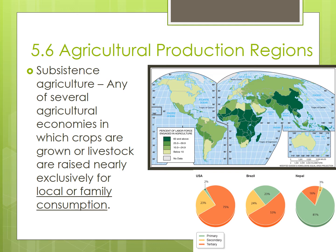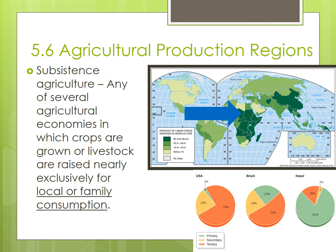But during the 1900s, the percentage of subsistence farmers declined as countries benefited from the Second Agricultural Revolution and the Industrial Revolution and began to transition to commercial agriculture. However, in many periphery countries such as Nepal or Chad, agriculture remains the primary employer, with approximately 80% of the population engaged in farming. In Chad, agriculture still represents over half of the country's gross domestic product.